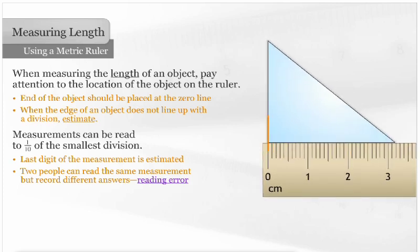Looking closer at the measurement of the triangle, we see that the end is not lined up with the division. The length of the triangle is 3.17 centimeters. One person may estimate the length to be 3.16 centimeters and another may record 3.18 centimeters. Each answer is correct due to the reading error.